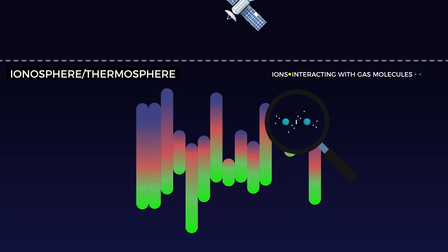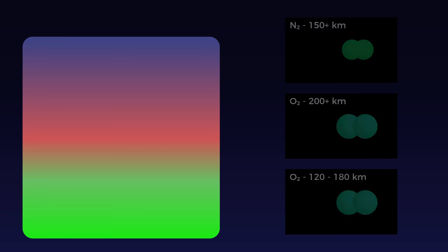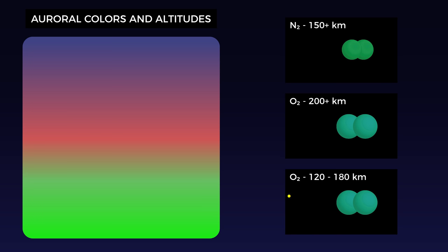Because the atmosphere is composed of different gases, the aurora can vary in color. Oxygen gas creates green, yellow, and red aurora, while nitrogen gas creates red, violet, and blue colors.